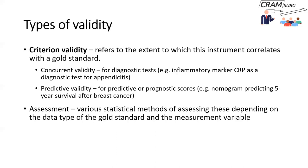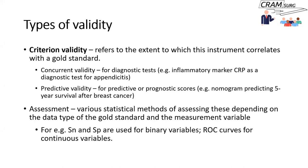Statistical methods for assessing concurrent or predictive validity depend on the data type. If CRP is binary and you're predicting appendicitis, you look at sensitivity and specificity. If CRP is a continuous variable and you're predicting risk, you can use an ROC curve — a receiver operating characteristic curve.